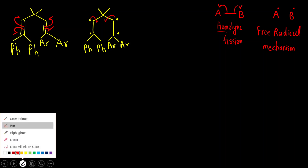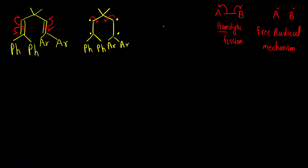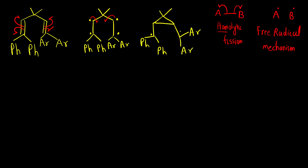Now these two electrons will form a cyclopropane ring. A cyclopropane ring is formed. We have Ph, Ph on one carbon, one electron here, and Ar, Ar on another carbon with one electron — giving us the cyclopropane diradical intermediate.